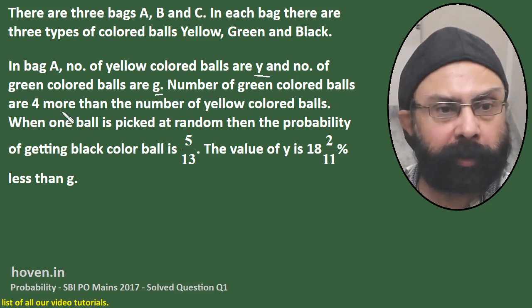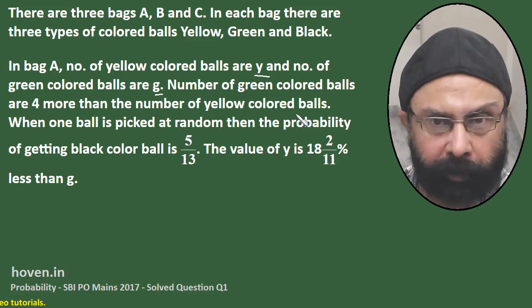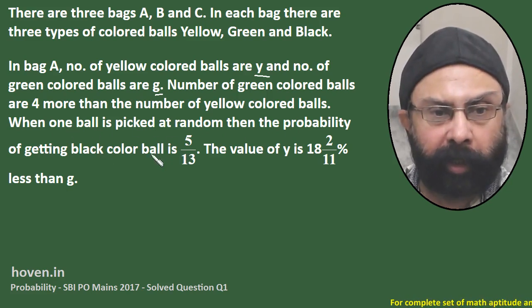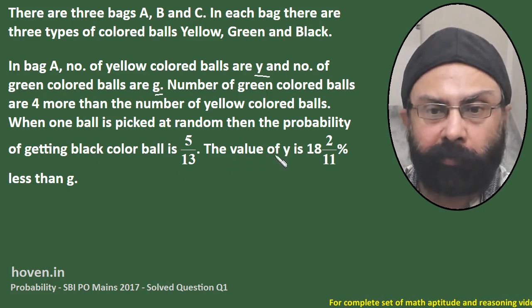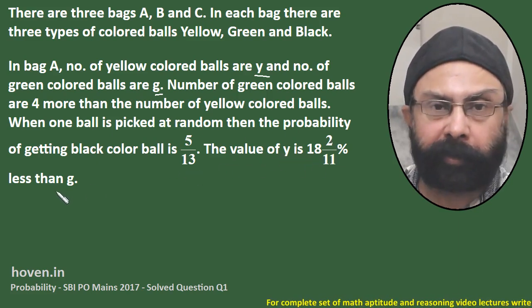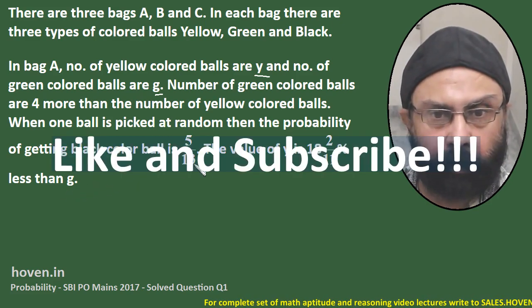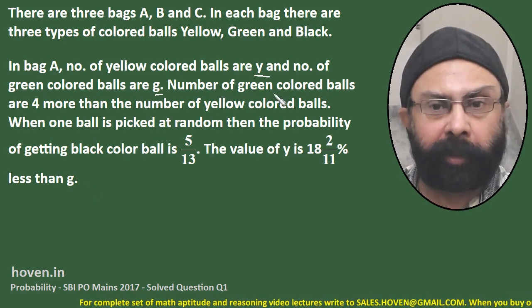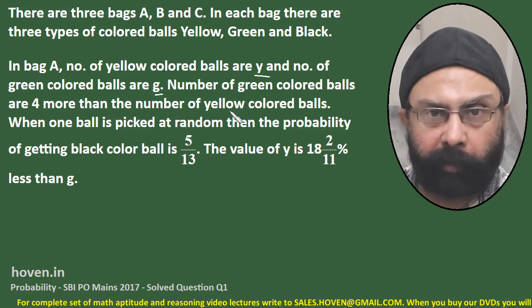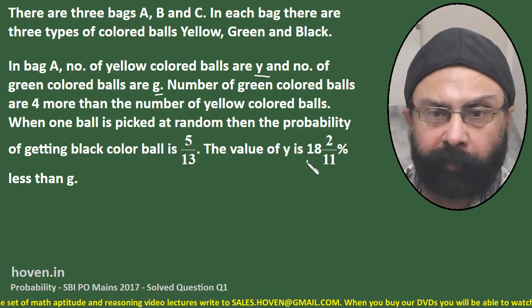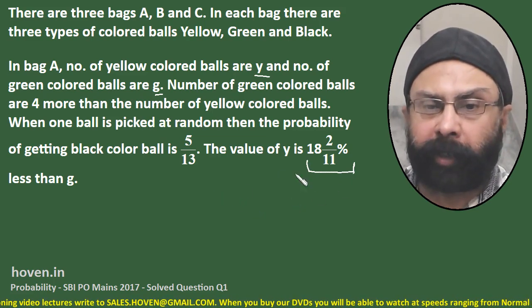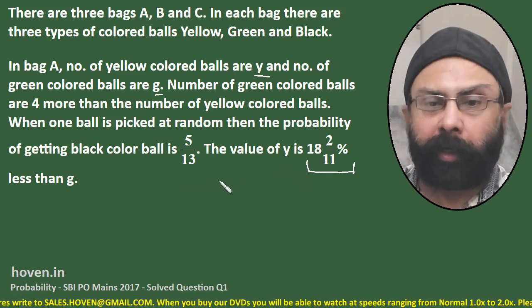The number of green colored balls are four more than the number of yellow colored balls. When one ball is picked at random, the probability of getting a black colored ball is given. This statement will give us information about black balls. The value of Y is 18 2/11 percent less than G. This is a relation between Y and G, and the first statement gives another relation: green balls are four more than yellow balls.